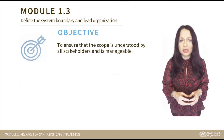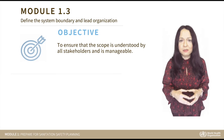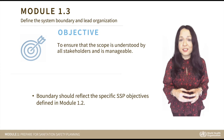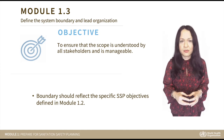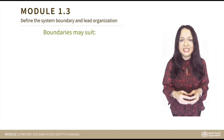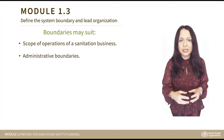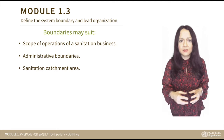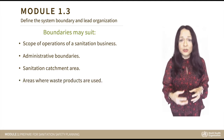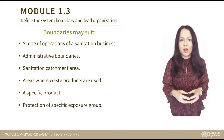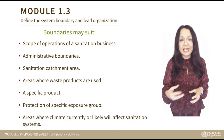Module 1.3 is called 'Define the Sanitation Boundary and Lead Organization.' The aim is to ensure that the scope of the process is understood by all stakeholders. The boundaries shall reflect the specific SSP objectives defined previously. SSP boundaries might need to be defined to suit the scope of a sanitation business, administrative boundaries, sanitation catchment area, areas where waste products are used, a specific product, or protection of a specific exposure group.